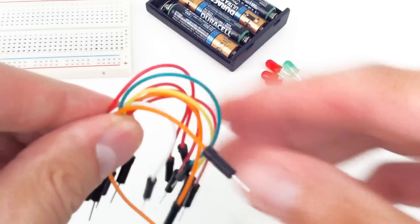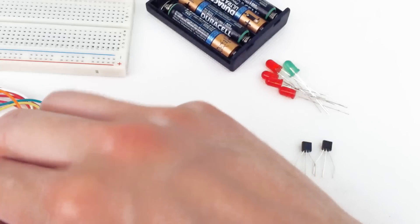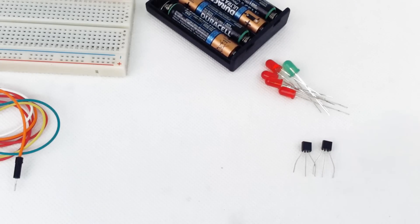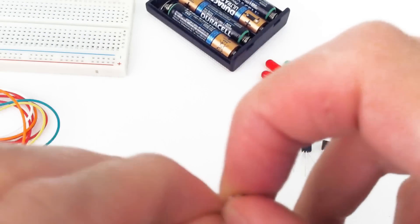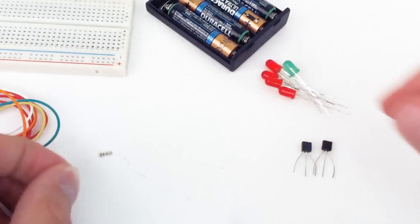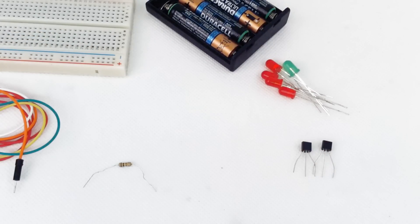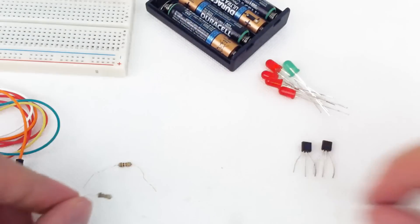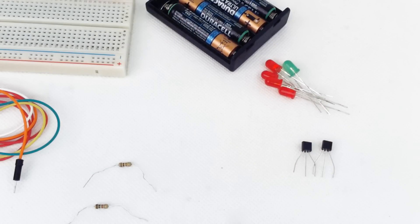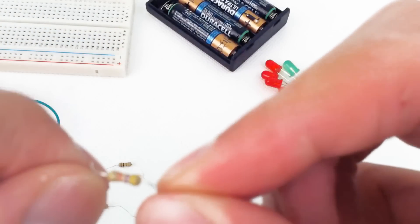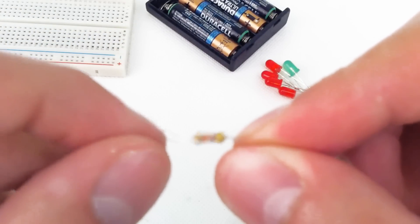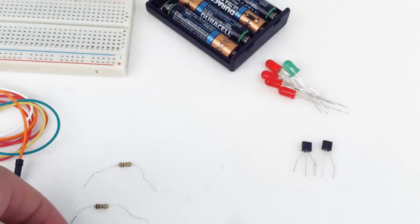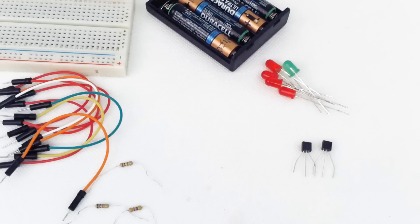We'll need lots of jumper wires and some fixed resistors: brown black brown, 100 ohm; brown black red, 1000 ohm; and yellow violet red, 4.7K ohm or 4700 ohms. Those are the components, so now let's put it together.